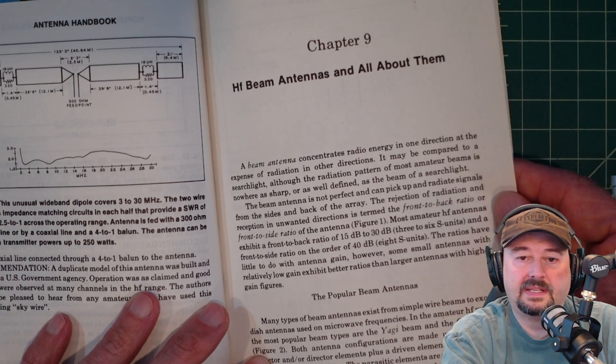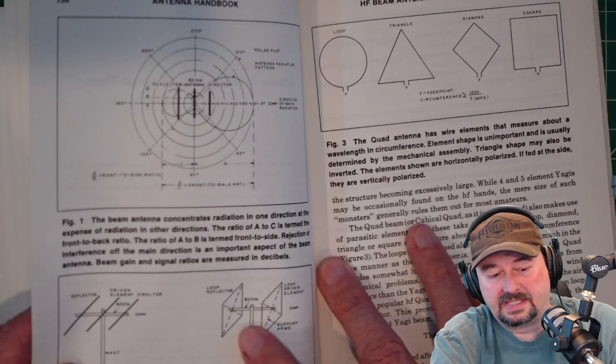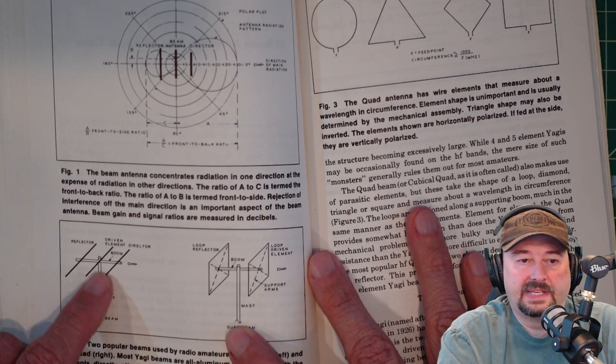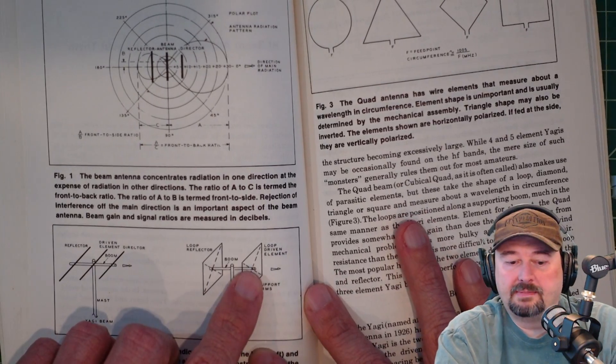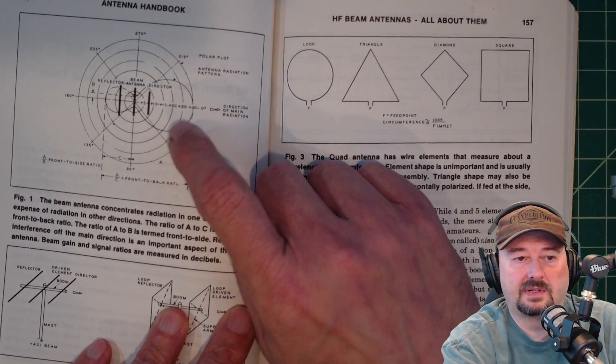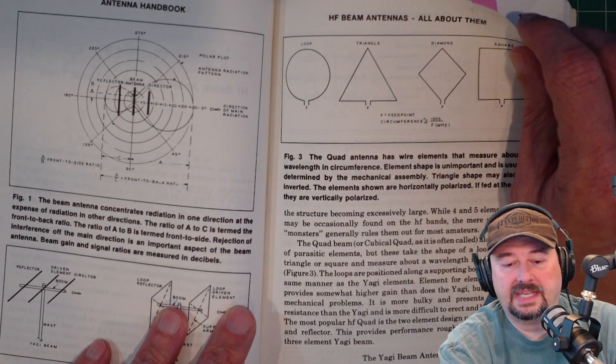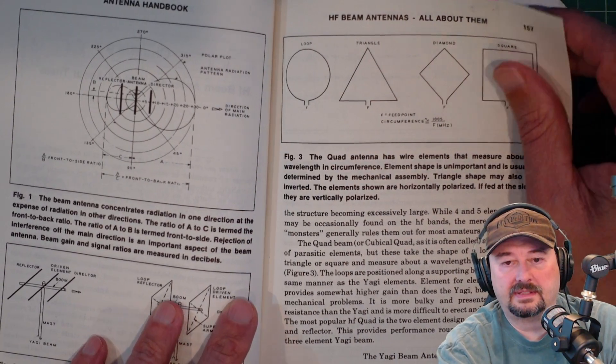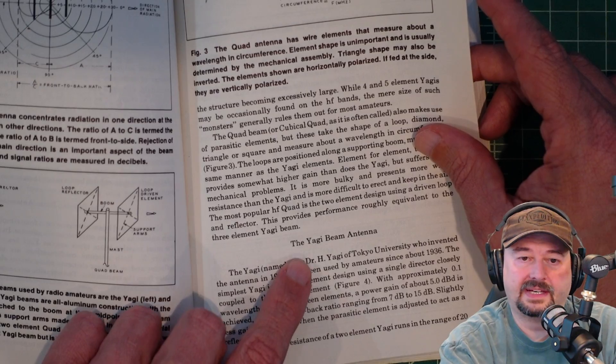Chapter 9 talks about beam antennas, some popular beam antennas. And he goes in here, talks about Yagi antennas and quad beams and some of the different things about them. Here are some charts about the gain of these beam antennas. And here's a bunch of information about the Yagi beam antenna.